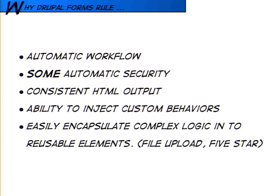Drupal also provides automatic security for us — that fix for local modification where it compares the submitted form to the form stored in cache. We also get really big benefits because Drupal's Form API is an abstraction around HTML forms and we're letting it create the HTML for us — we get much more consistent HTML output. We can ensure all forms have label fields with the correct attributes, in the right order, and the Form API helps deal with accessibility by adding the appropriate attributes to text fields.